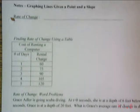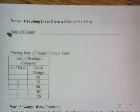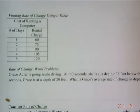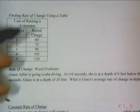Here's the notes on graphing lines when given a point and slope. We'll go through some of these problems together in case you missed the lesson. The first one is finding the rate of change using a table.